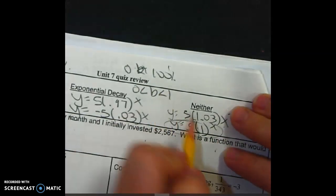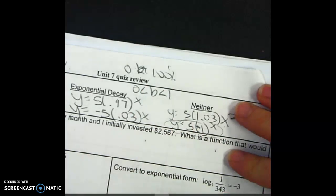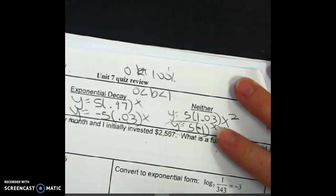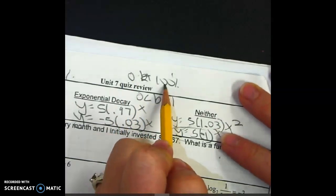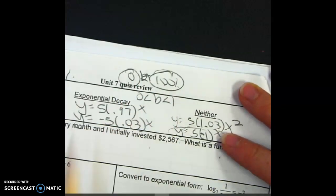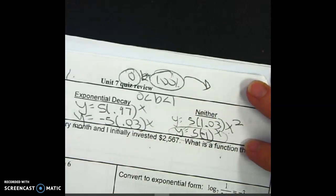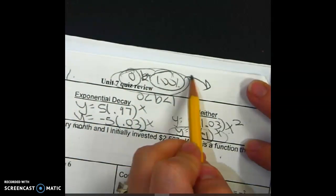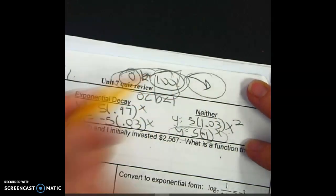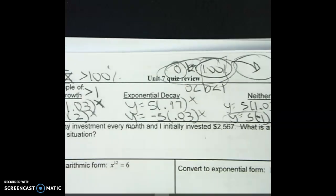But let me tell you what isn't either. Y equals 5.1 to the x. Because that's not growth or decay. That's 100%. You got 5 bucks. Nothing's going to change. It's not going to go up. It's not going to go down. That's like 5 bucks in your pocket. Nothing's going to happen. Okay, it's still going to be 5 bucks. All right, let's look at this word problem here.